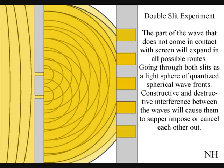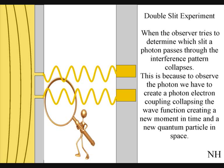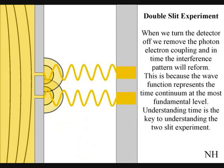When the observer turns on a detector to determine which slit a photon passes through, the interference pattern collapses. At that moment in time, the interference pattern will disappear, because to observe the photon, we have to physically create a photon-electron coupling, collapsing each wave-front into a new quantum particle that will have its own position in space and time that the wave-front never had before the collapse.